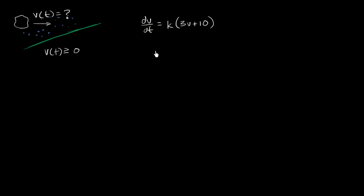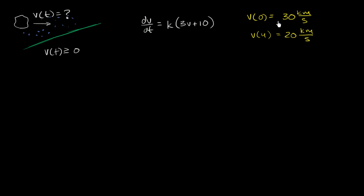To solve for the particular solution, we need some data points, and we are given them. We're told that the velocity at time zero is 30 kilometers per second — we'll do everything in terms of kilometers and seconds. Our velocity at time equal to four seconds after entering the atmosphere is 20 kilometers per second, which is in line with our intuition that we should be slowing down due to friction. Now, I encourage you to pause the video and try to find the particular V of T. If the numbers get a little hairy, try to round to the nearest thousandth.